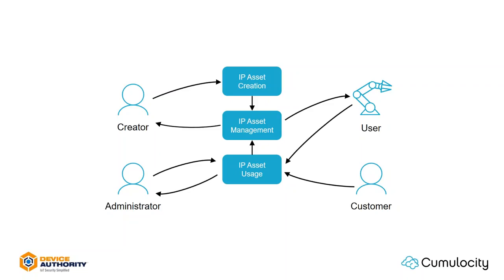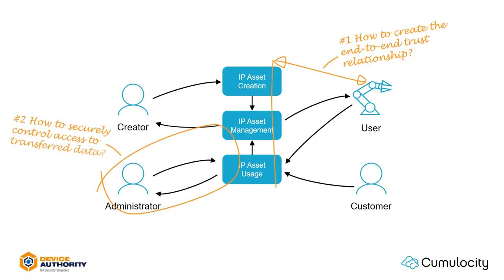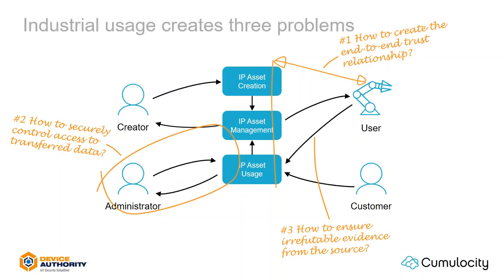The securing of industrial intellectual property isn't without its challenges. Firstly, the creation of a secured encrypted channel between the systems holding the intellectual property and the large volume of assets requiring its usage requires a trust relationship to be created between them — how can this be done effectively? Secondly, there are multiple users of the intellectual property and its usage information — how can this information be secured end to end so that only authorized users have access and it's actually readable to them? And as licensing is likely to require some knowledge of usage, how can usage information be brought back from the asset in a way that its accuracy is irrefutable?